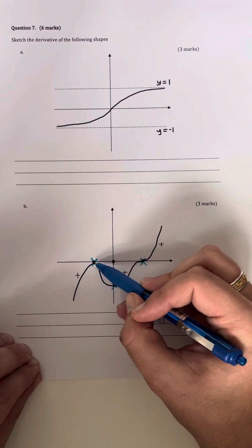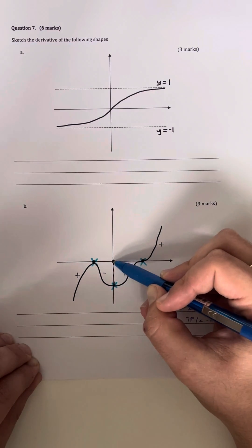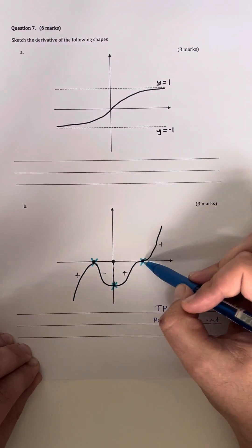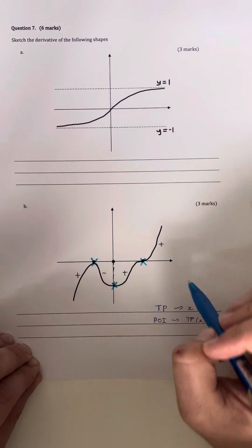So I have one here, which is the turning point. I have one here, which is another turning point, and I've found the x-intercept, which is roughly there. And I also have a point of inflection, which is also a zero gradient point as well.